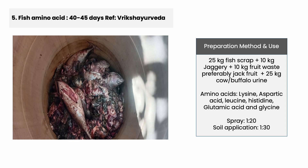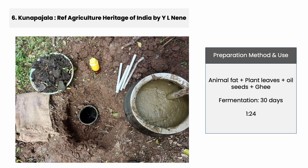We use fish crabs with jaggery — the fish combined with jaggery is a fantastic amino acid source, containing lysine, aspartic acid, histamine, glutamic acid, and glycine. We use it both as a foliar spray and for soil application. This is kunapajala. You can refer to the Agricultural Heritage of India book written by Vail Nini, an ICAR scientist. Kunapajala is extracted from animal matter, plant cleaves, oilseeds, and topping of ghee, and fermented for about 30 to 35 days.